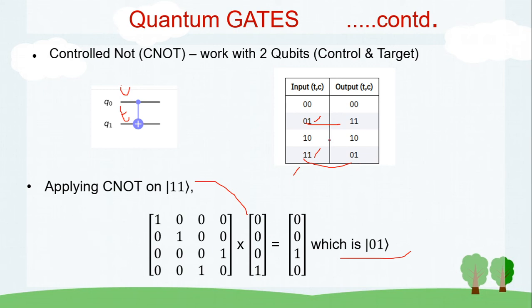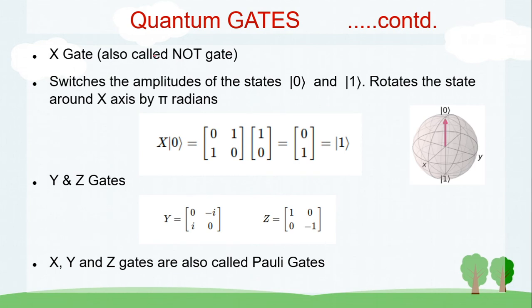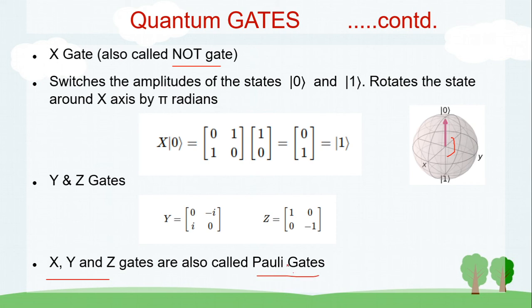There are more gates: the X gate, also called the NOT gate, switches the amplitudes of the zero and one states — it takes zero to one and one to zero. It rotates the state around the x-axis, which is why it is called the X gate. The Y and Z gates work similarly — Y rotates around the y-axis, and Z rotates around the z-axis (with no effect on the zero state but changing phase in other states). These three are called the Pauli gates.